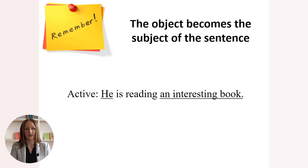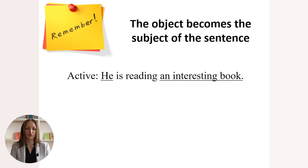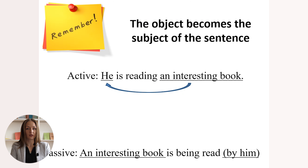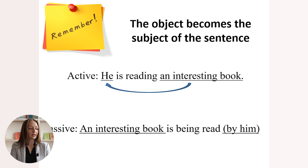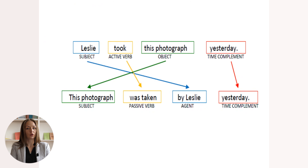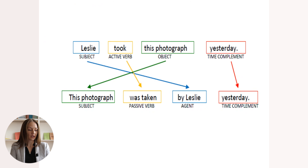Let's look at the following example. 'He is reading an interesting book.' This active voice sentence is transformed this way: 'An interesting book is being read by him.' Another example: 'Leslie took this photograph yesterday' becomes 'This photograph was taken by Leslie yesterday.' The subject of the active sentence becomes the agent of the passive one, and the object becomes the new subject.